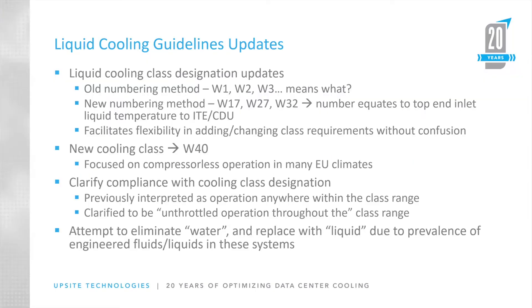The liquid cooling section went through a significant update. The primary change is the designations — the numbering method. The original classes were W1, W2, W3, which weren't very intuitive. We changed them to W17, W27, and W32. What this means is that if you're talking W27, the water supply to either the CDU or the IT equipment has a maximum of 27 degrees centigrade; W32 accordingly has a maximum of 32 degrees centigrade.